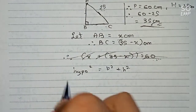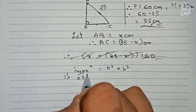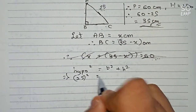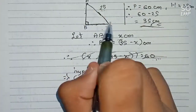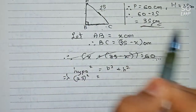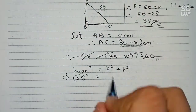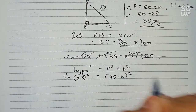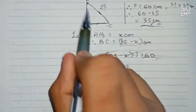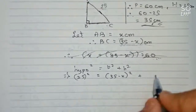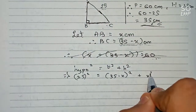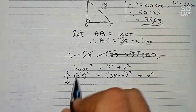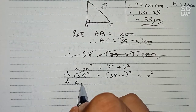Now putting in the values: our hypotenuse is 25, so 25 squared. BC is taken as 35 minus x, so (35 minus x) squared, plus AB which is x, so plus x squared. Now 25 to the power 2 equals 625.